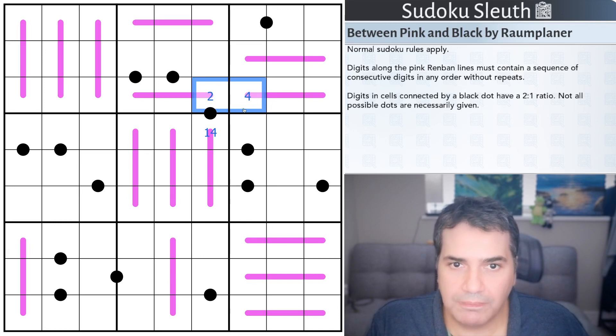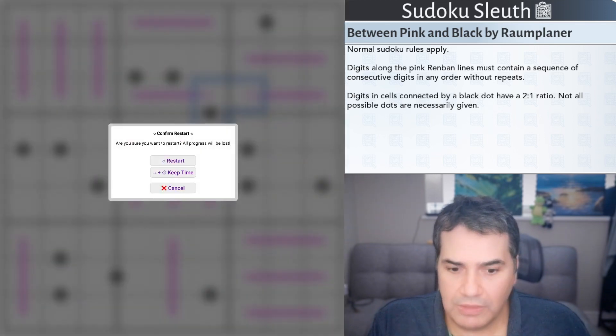It's purely about the given black kropki dots, Sudoku and renban. Fairly straightforward set of rules from Rome Planner. As always, if you want to give this one a go, link will be in the description down below. With that said, I'm going to restart the clock and see how I get on.